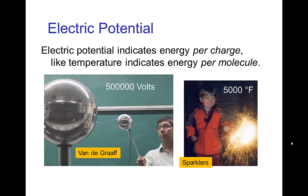So much like temperature indicates energy per molecule, electric potential indicates the energy per charge. So you can catch five thousand degree Fahrenheit sparks from a sparkler in your hand, and just because they're tiny, you are not receiving that much energy. Same thing with the Van de Graaff, just a single spark from it doesn't carry as much energy.